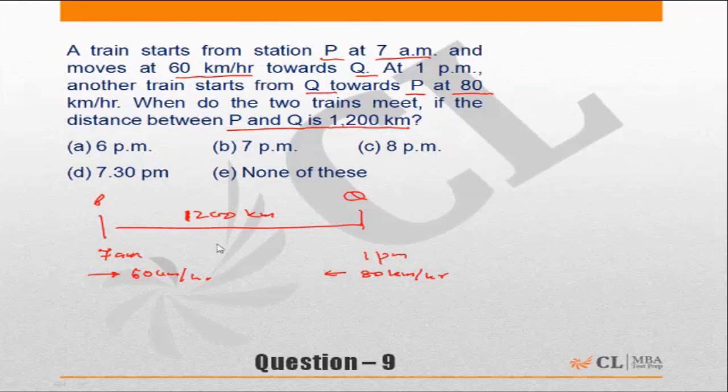Now the first thing for such questions is to get both the trains on a common base. This train is starting at 7am, this train is starting at 1pm, or there is a gap of 6 hours between the two trains from 7am to 1pm. So my first thing will be: this train which started at 7am, where would this be at 1pm? Once I get both of them at a common time slot I can then start working.